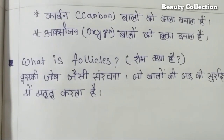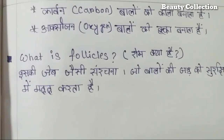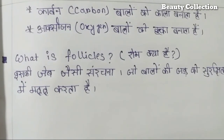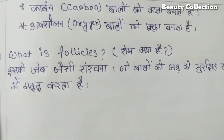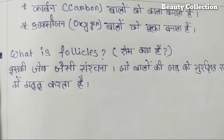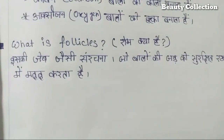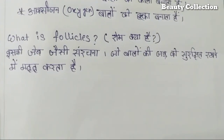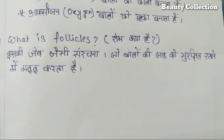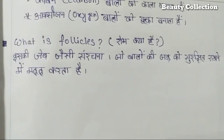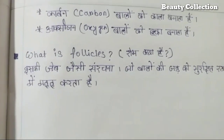Regarding carbon color: Indian and Asian hair has more carbon. In European countries, hair has more oxygen, so the color is different. Now, what is a follicle? A follicle helps to keep and anchor the hair. This is part of trichology — more parts will come after this.